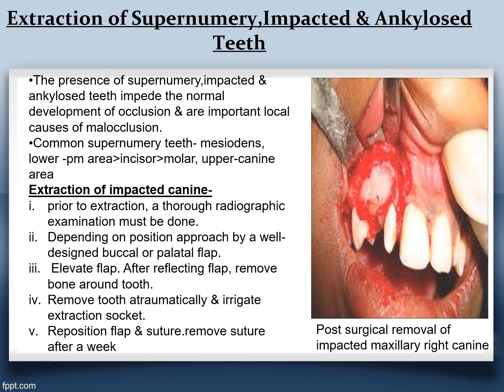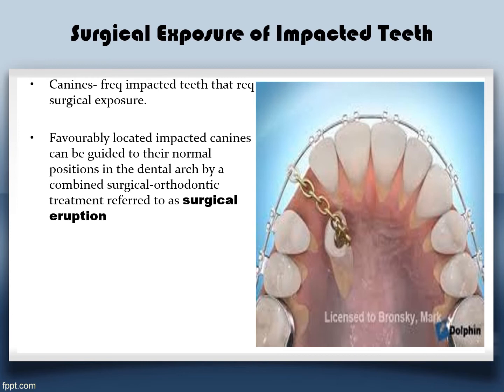For extraction of an impacted canine: prior to extraction, take a radiograph. Depending upon the position of the tooth, formulate a plan whether to reflect the buccal flap or the palatal flap. Give local anaesthesia, elevate the flap, remove the bone around the tooth, remove the tooth atraumatically, irrigate the socket, reposition the flap, and suture it. Remove sutures after one to two weeks.